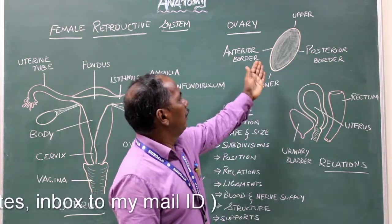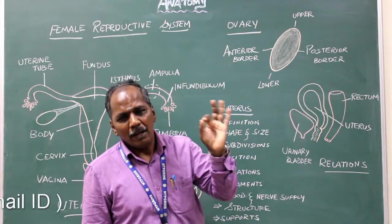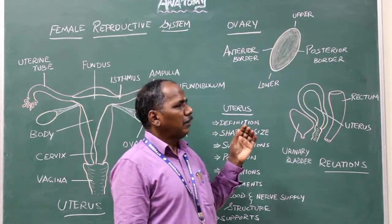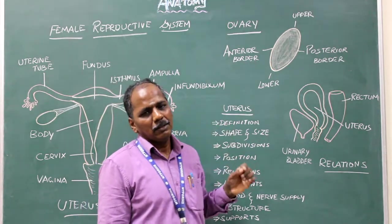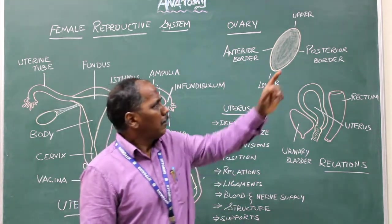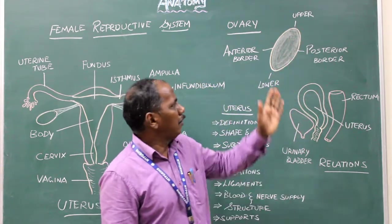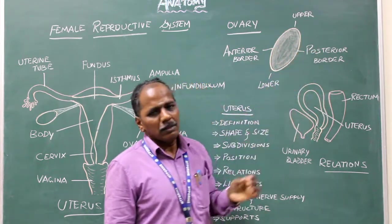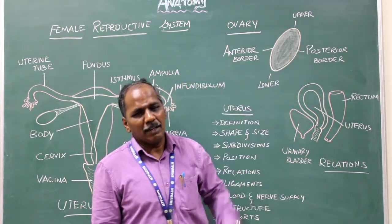Ovary: it is a paired female gonad situated in the iliac fossa. Shape: it is almond-shaped. Parts: it has two poles — superior pole and inferior pole; two borders — anterior border and posterior border; two surfaces — lateral surface and medial surface.